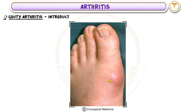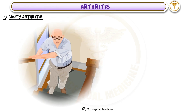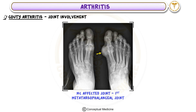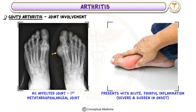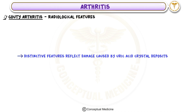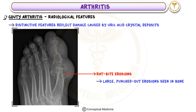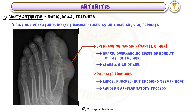Gouty Arthritis: Gouty arthritis is a form of inflammatory arthritis caused by the deposition of uric acid crystals in the joints. It typically occurs in older males. The most commonly affected joint is the first metatarsophalangeal joint, often presenting with acute, painful inflammation that can be severe and sudden. On imaging, gouty arthritis shows rat bite erosions — large, punched-out erosions in the bone — and overhanging margins (Martell's sign): sharp, overhanging edges of bone at the erosion site, a classic sign of chronic gout.